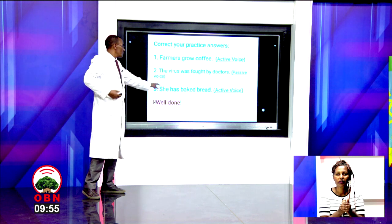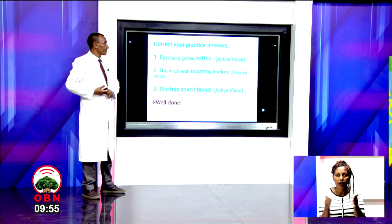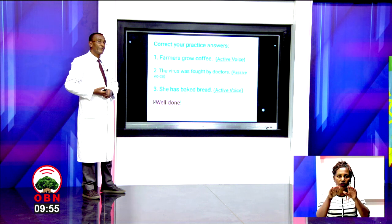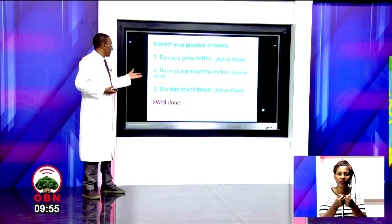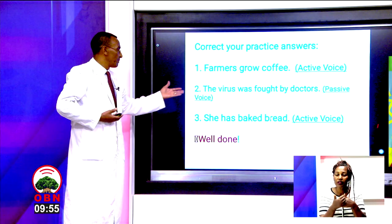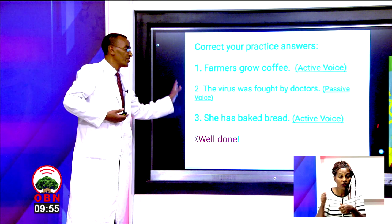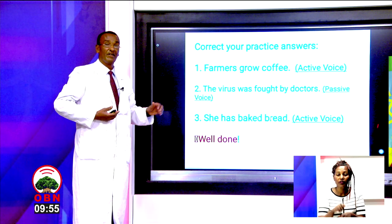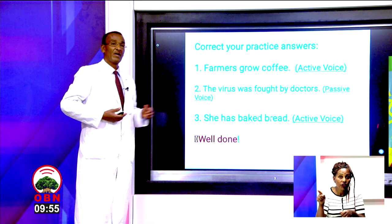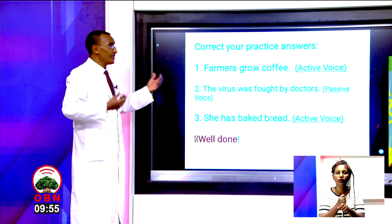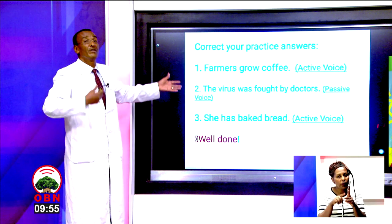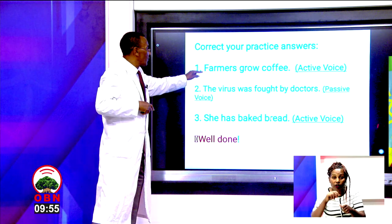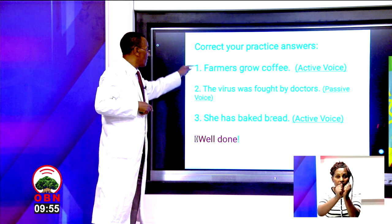Number three: she has baked bread. This is again active form. She has baked bread — she did some act on bread. That's active, because it begins with the actor.